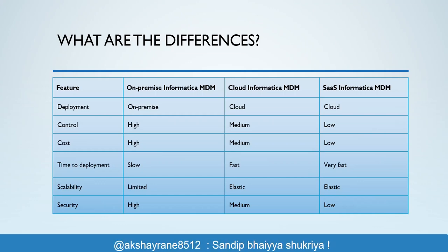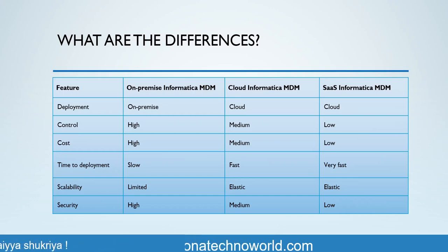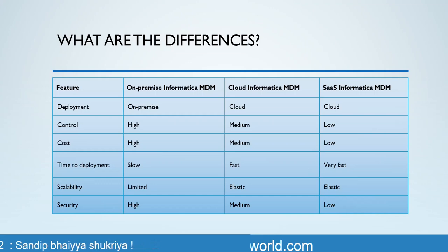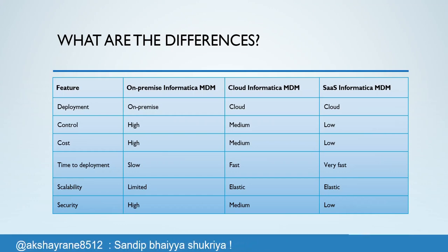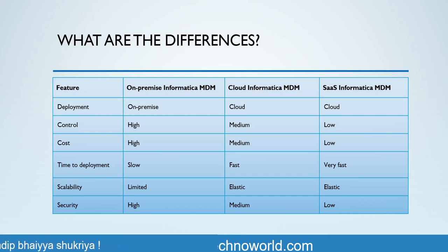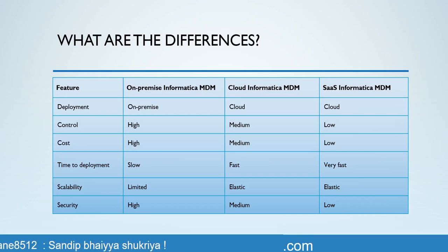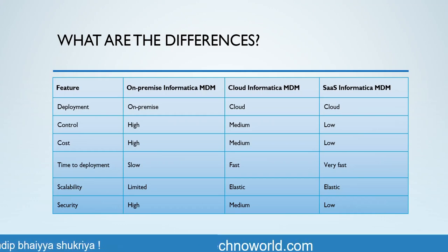Security-wise, on SaaS you have to rely on the SaaS-provided security — you cannot use your own security structure. If your organization uses any specific security, you cannot leverage it in the SaaS version. This creates a big clash with existing security setups, so you have to be very mindful about this. Regarding cost, on-premise requires acquiring the license and software before starting installation, which means high initial cost. Cloud version has a medium cost compared to on-premise. SaaS is subscription-based, so you can subscribe to fewer services, making cost lower compared to on-premise and cloud.